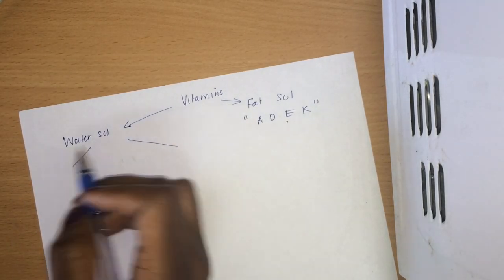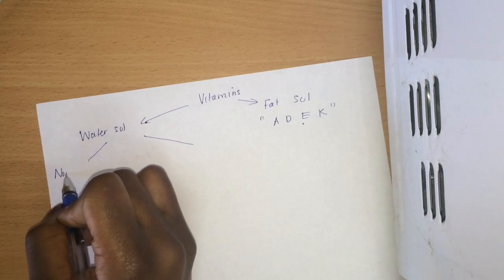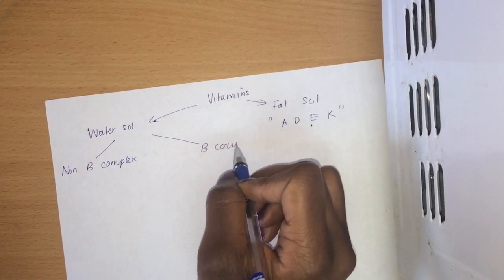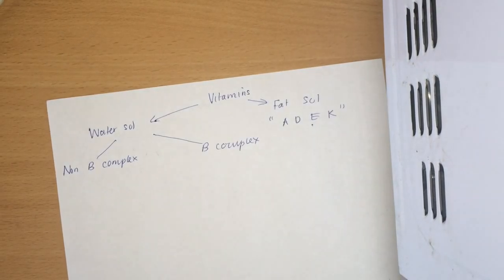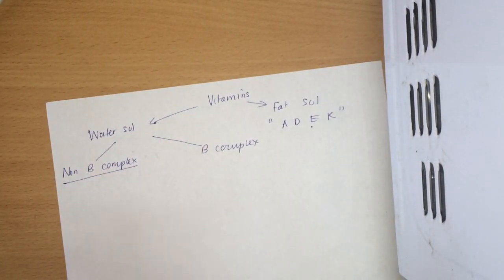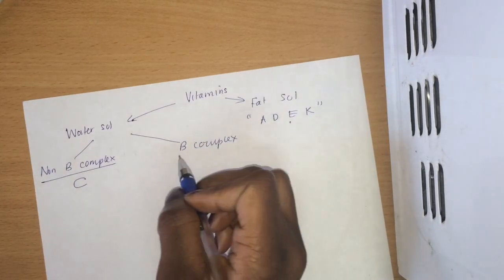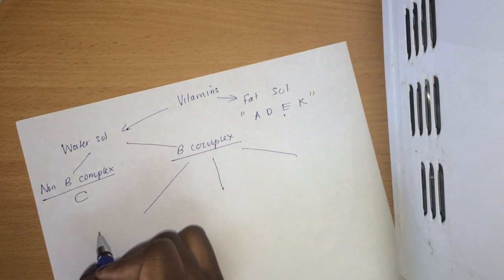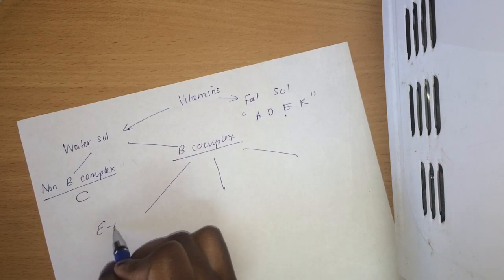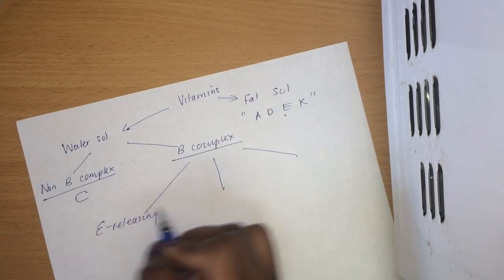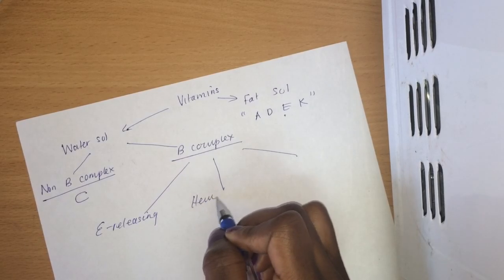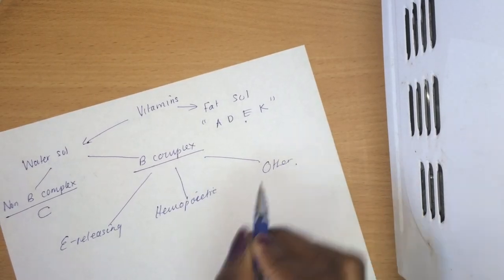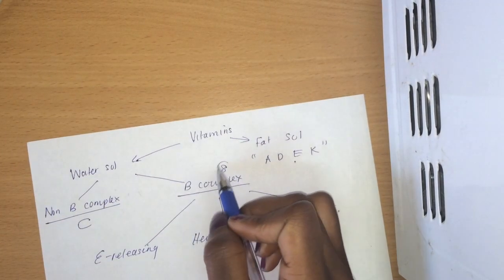Water-soluble vitamins are divided into two major groups: non-B complex vitamins and B complex vitamins. The non-B complex vitamins, we only have one and that is the pretty little C. Under B complex we have three subgroups and those are named as follows: energy releasing vitamins, hemopoietic vitamins, and other vitamins.